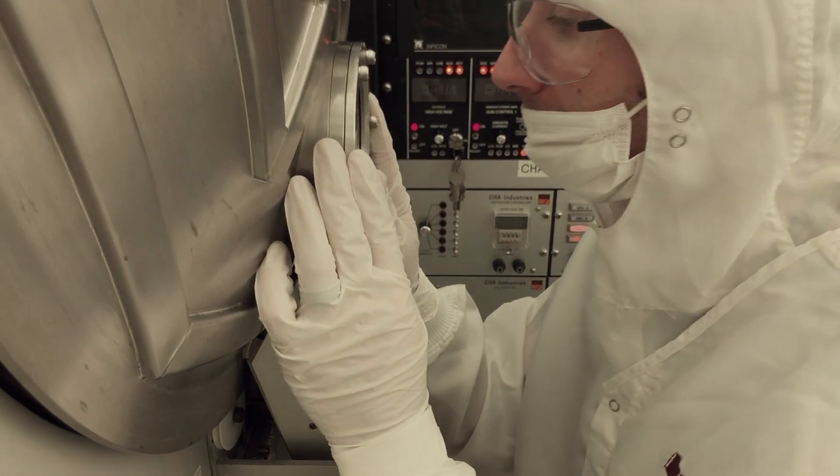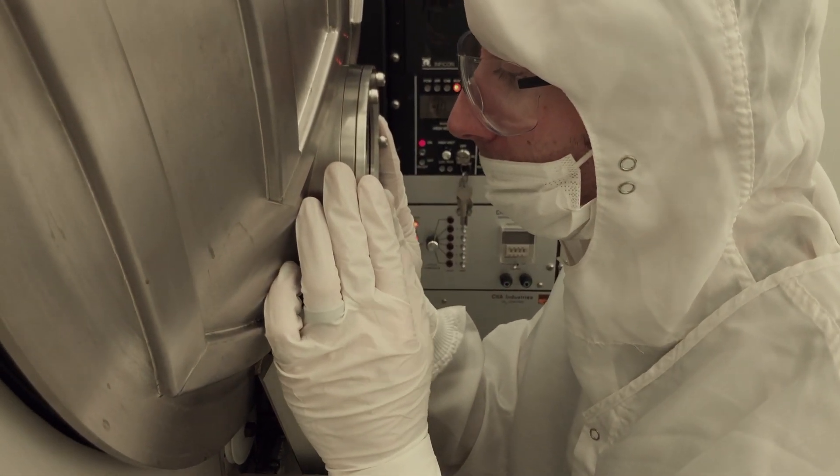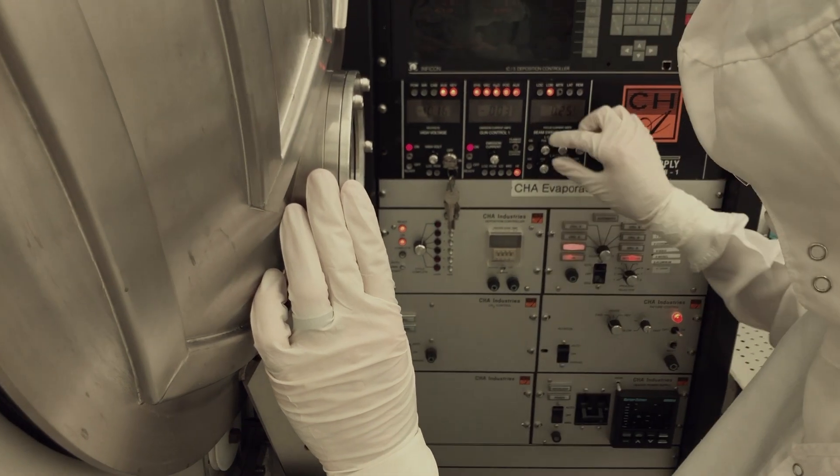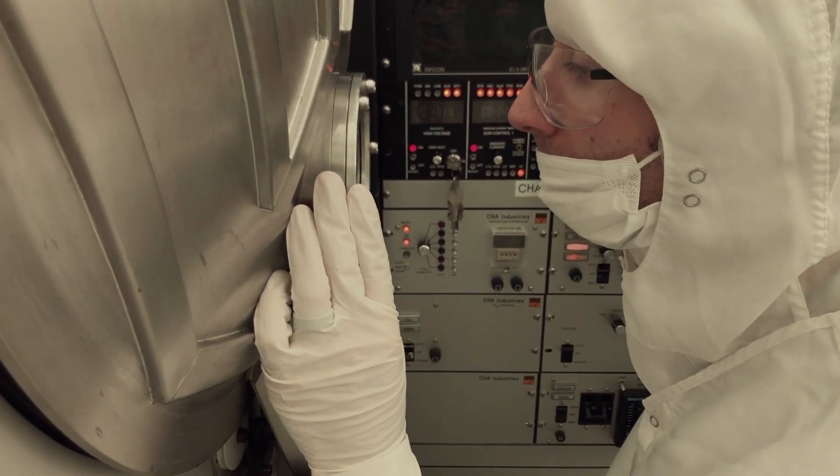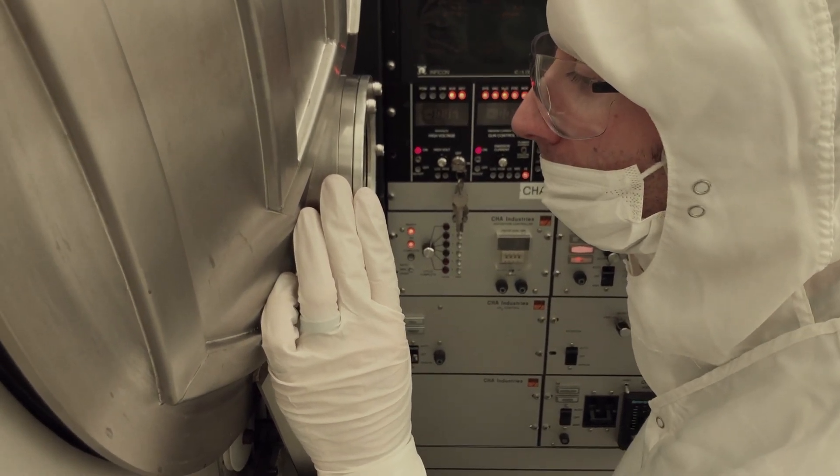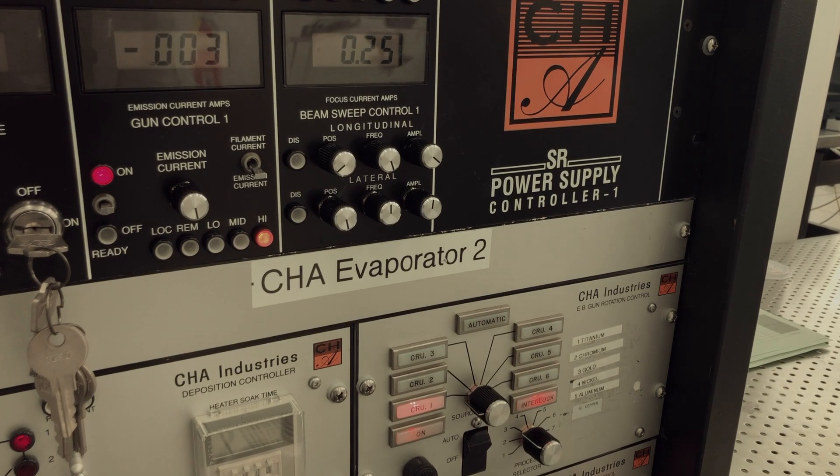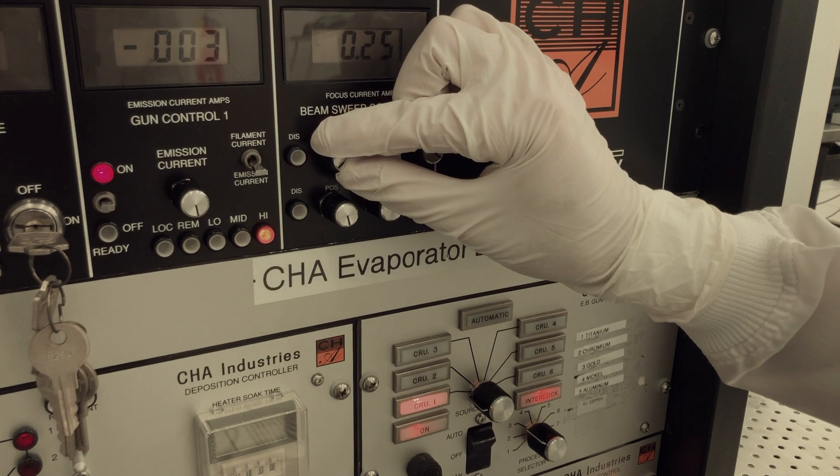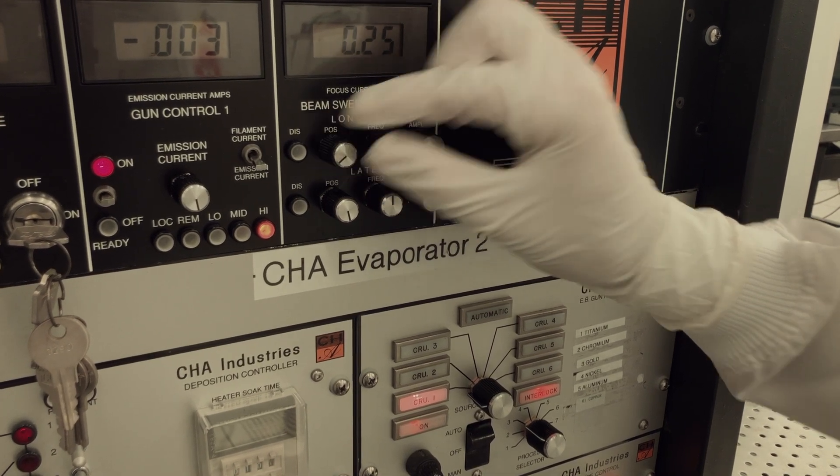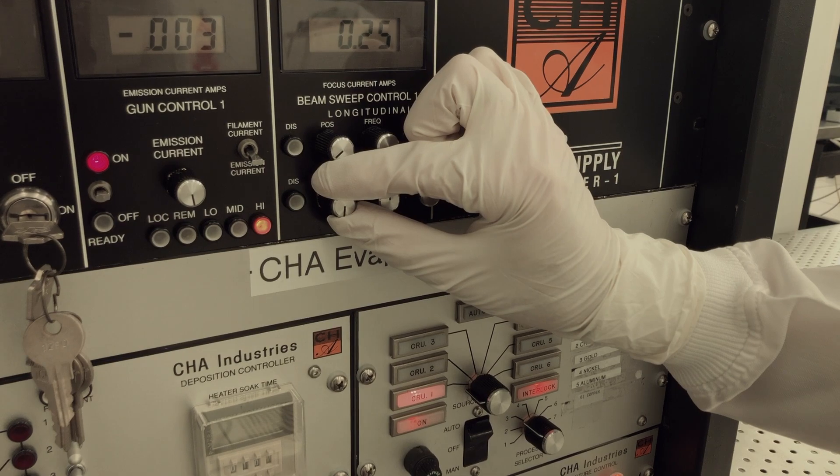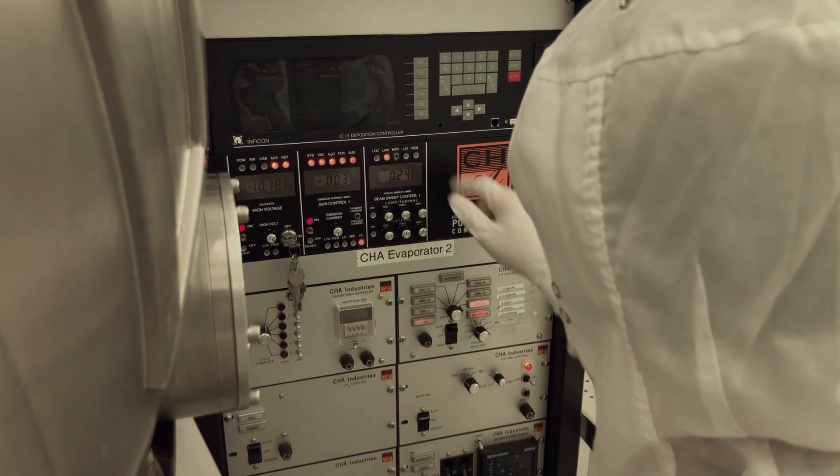Once your process has started, take a look through the viewing port on the front of the chamber. The beam pattern should be centered in the crucible. If it is not, use the position knobs on the beam sweep controller 1 to adjust the beam. The position knobs adjust the beam longitudinally and laterally. Try to position the beam before the shutter opens if you can.